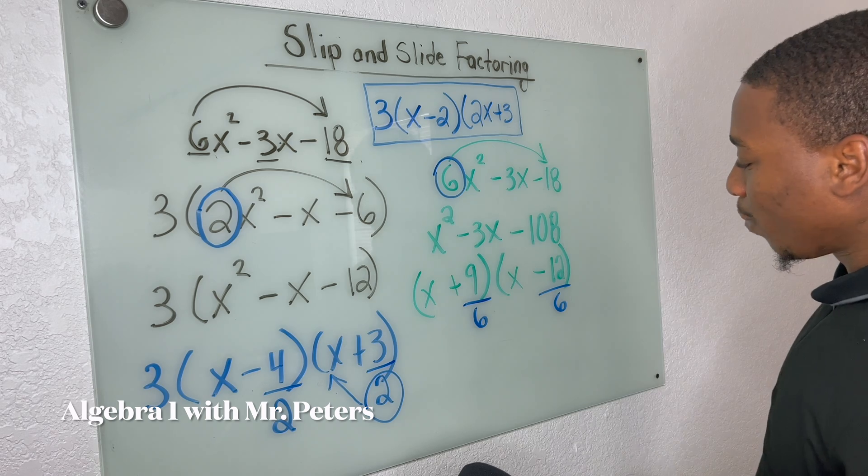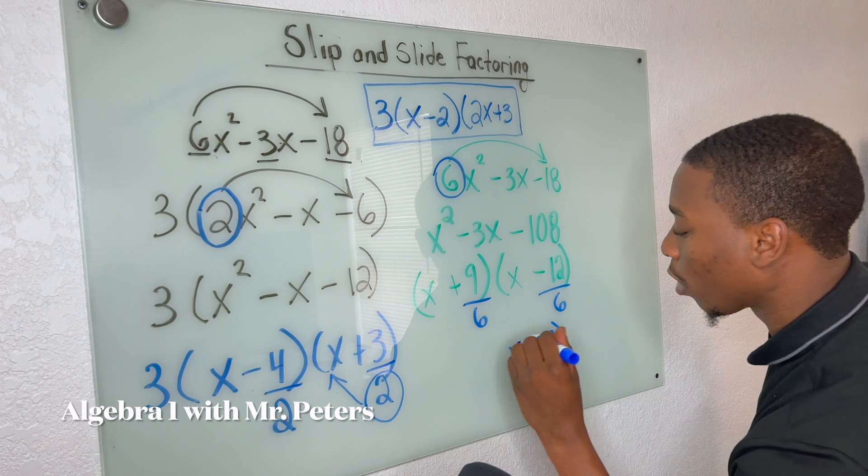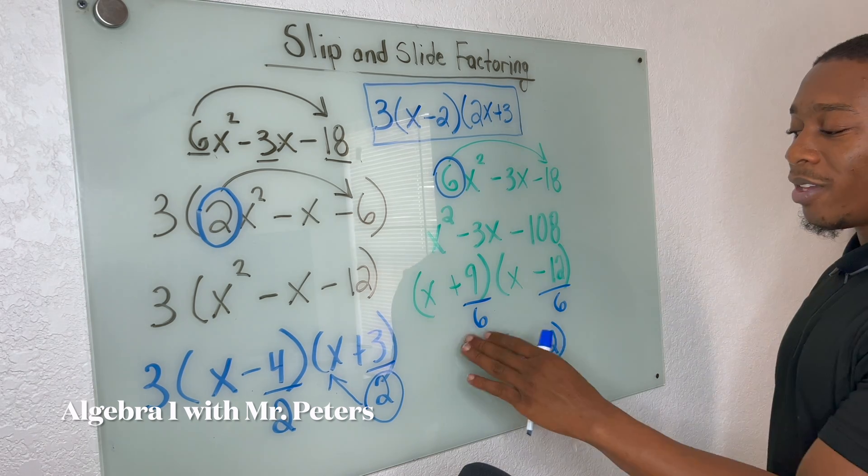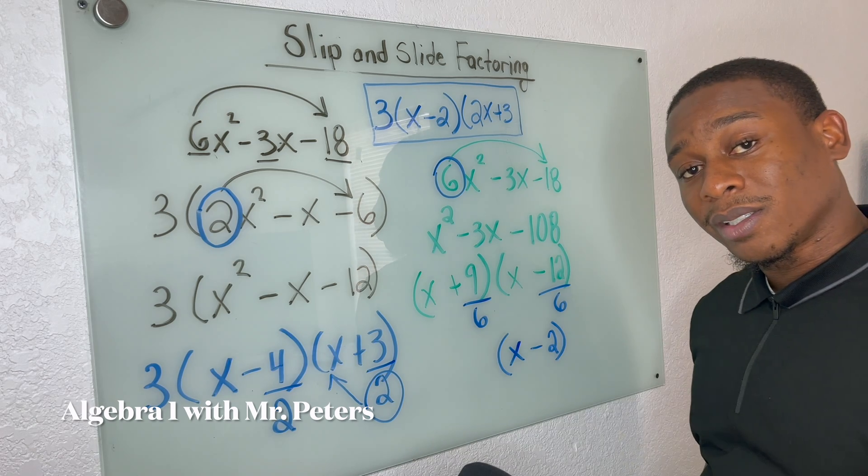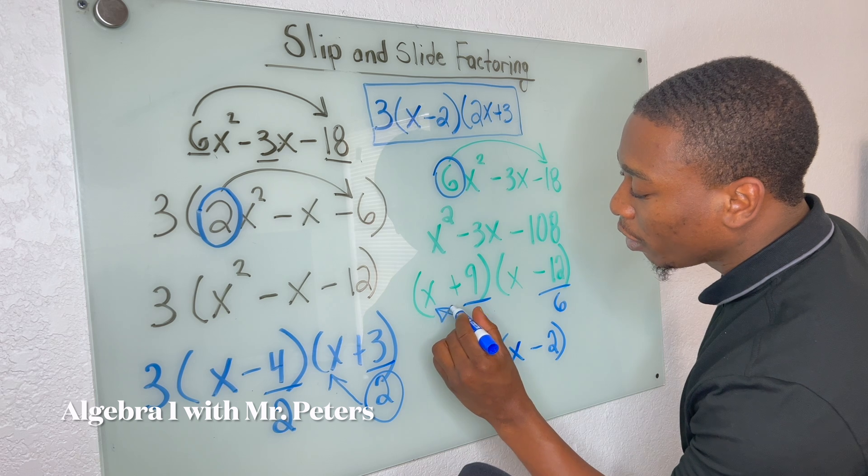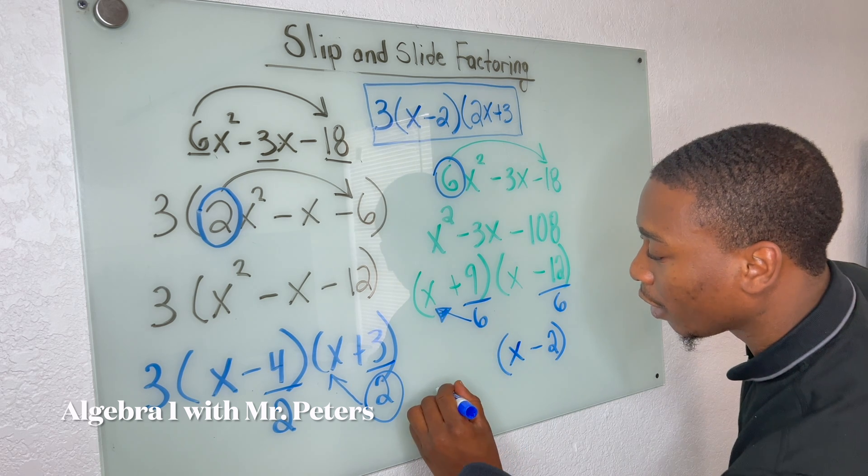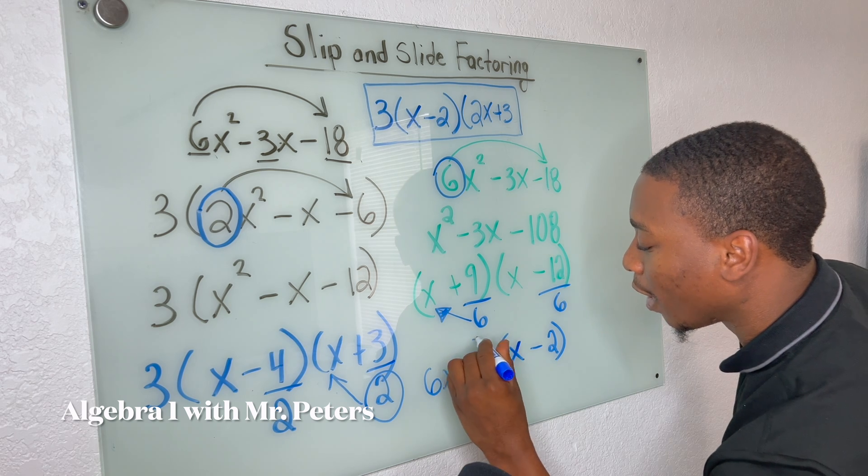So at this step here, guys, we're going to reduce. We have X minus two. And then this one's going to be a little tricky. So since we cannot divide evenly, I'm going to slide this out in front and we're going to get six X plus nine.